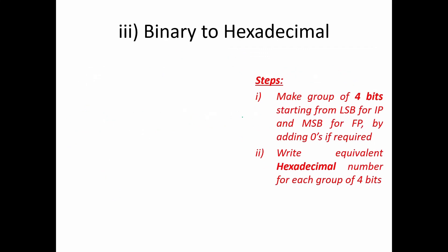Next is binary to hexadecimal, which is similar to binary to octal. Binary has radix 2 and hexadecimal has radix 16. Since 2⁴ = 16, we use 4 bits. The algorithm: make a group of 4 bits starting from LSB for the integer part and MSB for the fractional part, adding zeros if required. Then write the equivalent hexadecimal number for each group.